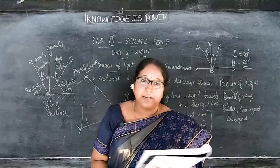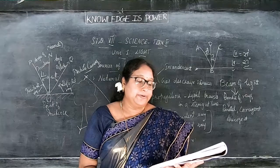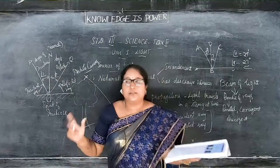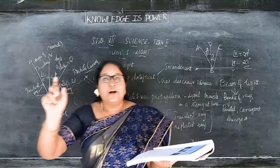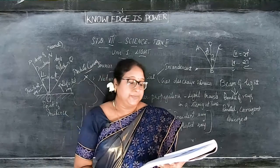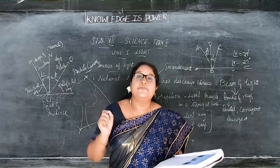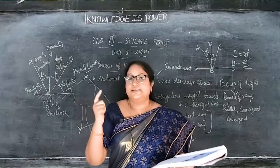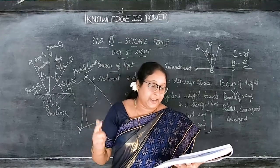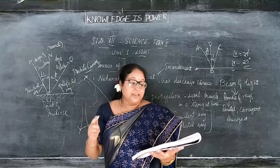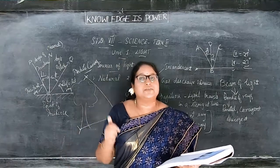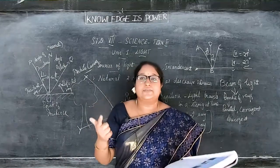Speed of light. When lighting a bulb in a dark room, light spreads the whole room quickly. This is because light travels very fast. Light travels three lakh kilometers per second in air. In theory, nothing can travel faster than light. So light travels in a straight line and light travels very fast.